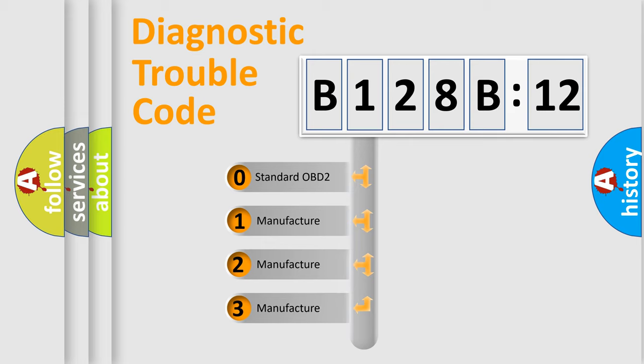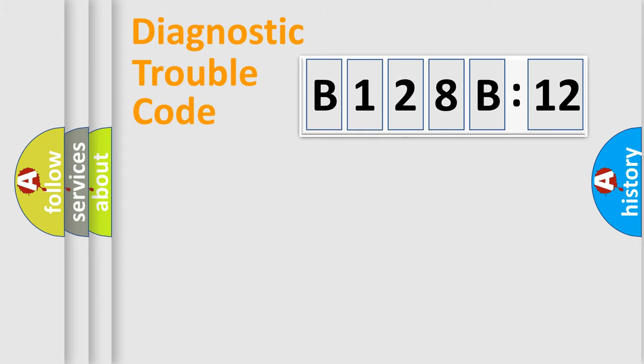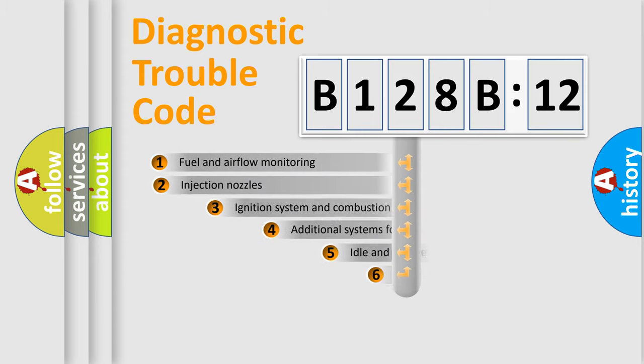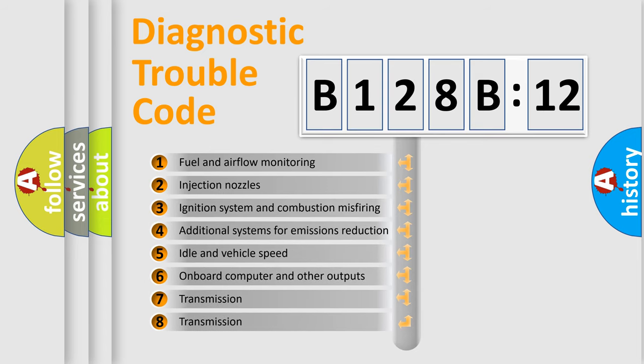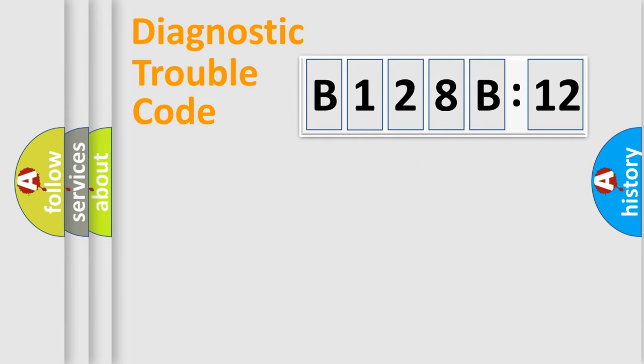If the second character is expressed as zero, it is a standardized error. In the case of numbers 1, 2, or 3, it is a more precise expression of a car-specific error. The third character specifies a subset of errors. The distribution shown is valid only for the standardized DTC code.